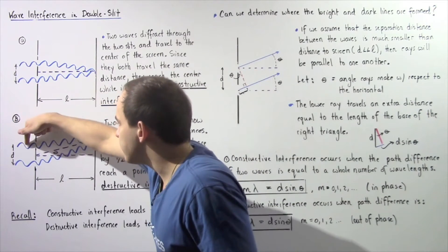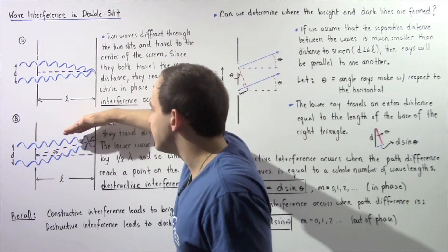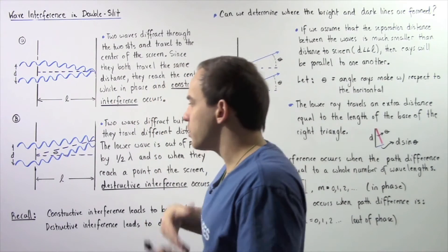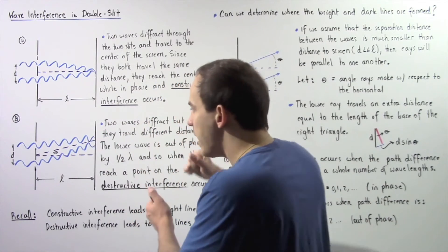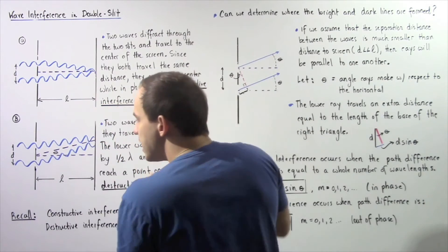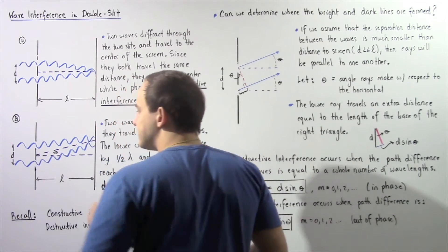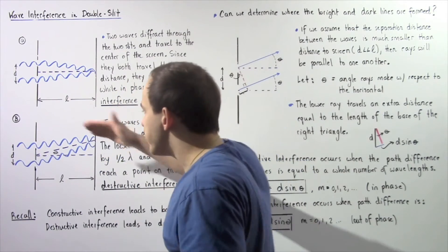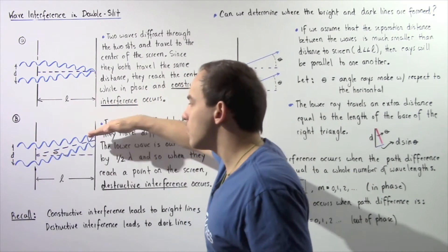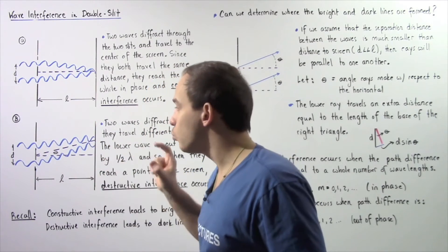Let's suppose this wave of light travels through the slit and diffracts only slightly upward, while this other wave diffracts slightly more. The goal of these two waves is to reach the same point on the screen. Initially they begin in phase and are separated by distance d. Notice this top wave has to travel less than this bottom wave, and because they have the same exact wavelength